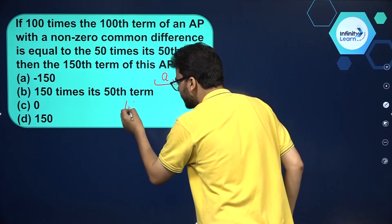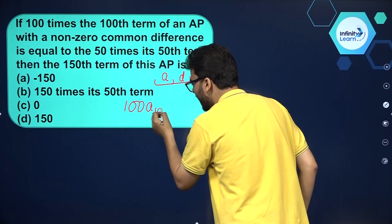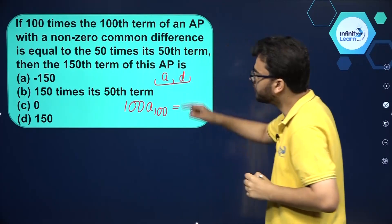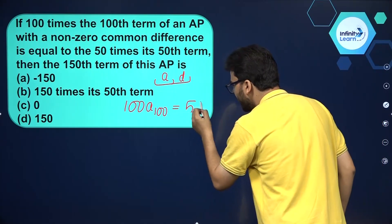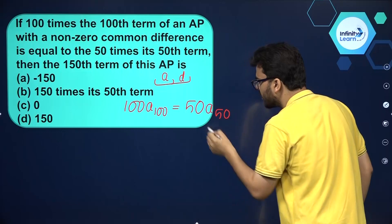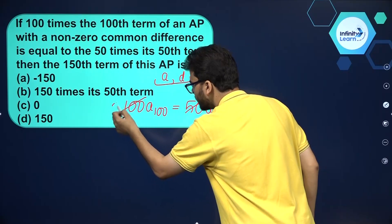100 times the 100th term, A100, equals 50 times its 50th term, A50. We can cancel out and get 2 times A100 equals A50.